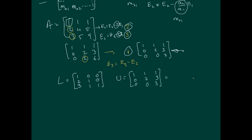We can check this. If we multiply L times U: the (1,1) entry is 1, then 1, then 1. Then (2,1) is 2 times 1 equals 2. Then 2 plus 2 equals 4, and 2 plus 3 equals 5. Then 3, then 3 plus 2 equals 5, and 3 plus 3 plus 3 equals 9. It works — that is our LU factorization.